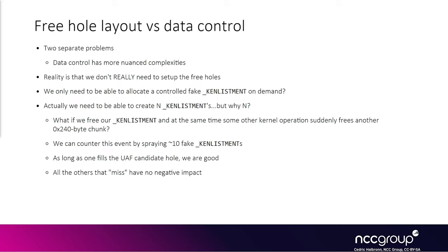So when you're triggering a bug like this, you don't just allocate one fake k enlistment and hope it fills the hole. You spray a bunch — how many is based on trial and error — because the kernel may have freed some other memory, causing your fake k enlistment to go into those extra holes rather than the one you want. The solution is to spray like 10 fake k enlistments every time we think we won the race, and in practice that's enough.